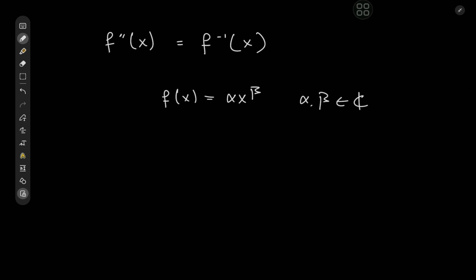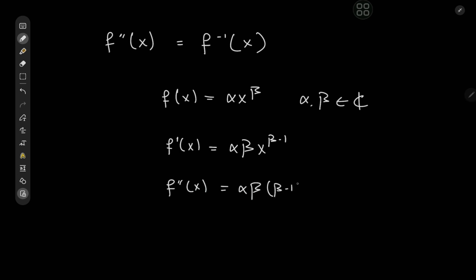Now it's time to solve for the actual values of alpha and beta to get the type of functions that would satisfy this differential equation. First we need the second derivative. We have f prime of x equal to alpha times beta times x to the beta minus 1, and f double prime equal to alpha times beta times beta minus 1 times x to the beta minus 2.